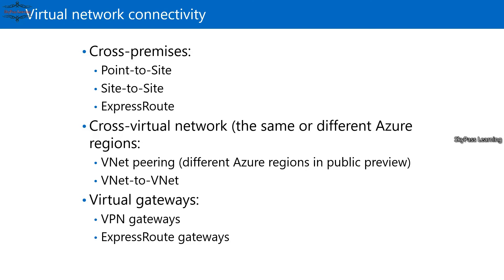For VNet-to-VNet peering, this option is available in a couple of regions. You can connect the same Azure region or two different Azure regions through virtual networks, establishing a VPN tunnel. It is equivalent to site-to-site VPN but connects different Azure regions or on-premises locations. You need both VNet-to-VNet as well as the VNet peering option.